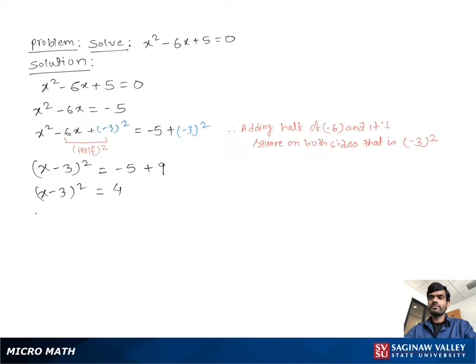Then we write x minus 3 equal to plus or minus square root of 4, because the squared form goes to the other side as a square root. So x minus 3 equals plus or minus 2.